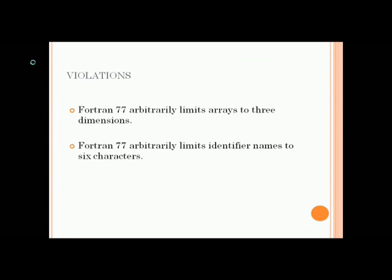Now let's see the violations. Fortran 77 is a good example of violation. Here, the array dimensions are limited to 3 and identifier name should be less than or equal to 6 characters. Those are the violation situations.